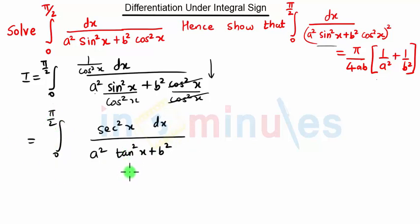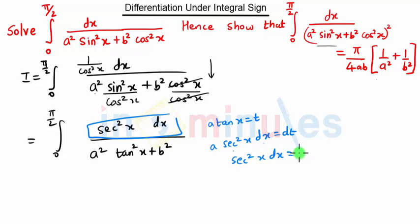We are using the traditional formula, so we put a·tan x equal to t. Then I am taking the derivative. The derivative of tan x is sec²x, so sec²x dx is dt. So sec²x dx, this whole term, will now be dt/a. Since we have changed the variable, our limits of integration will also get changed.